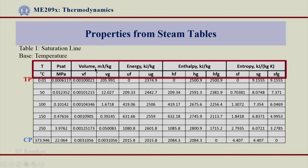Now let us look at the properties that we read for a given temperature and pressure condition. You can see volume given in m³/kg — this is specific volume. Then we have energy, which is thermal energy here. Then we have enthalpy in kJ/kg and entropy in kJ/kg·K. So specific volume, energy, enthalpy, and entropy are the properties that you can read from these steam tables.